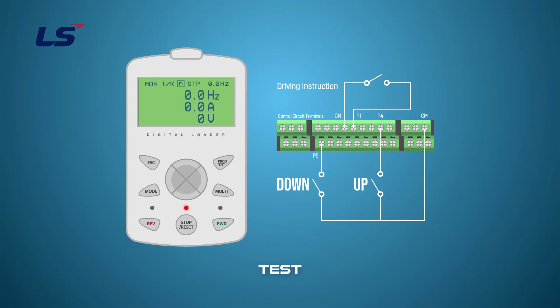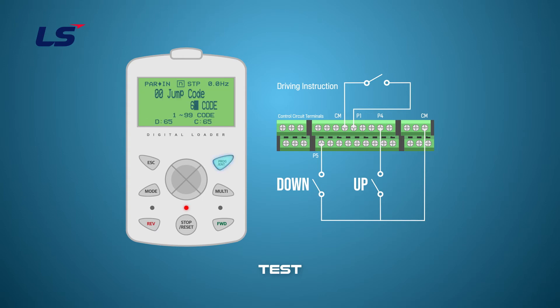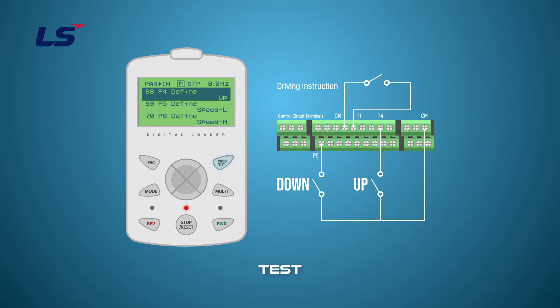Now, let's test the Up-Down in Normal mode. After selecting the digital input to use for Up-Down operation, program the corresponding terminal function to 17 Up or 18 Down.